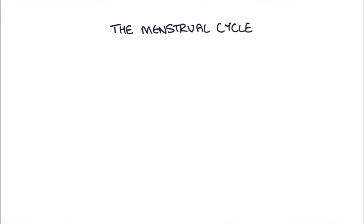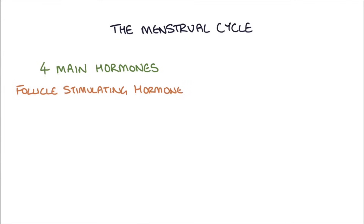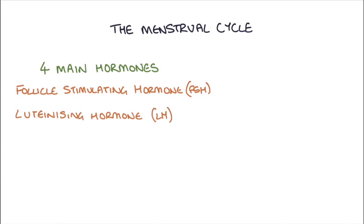The first thing to understand is the four main hormones involved in the menstrual cycle: follicle-stimulating hormone, which we abbreviate to FSH; luteinizing hormone, or LH; estrogen; and progesterone.